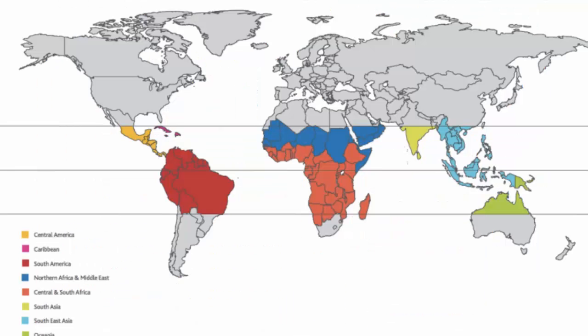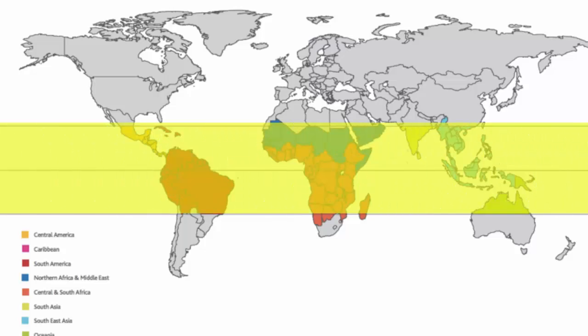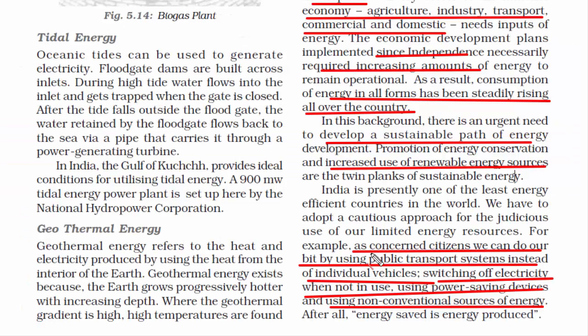These non-conventional sources are a bit costly, but if we can work on the cost, India can benefit hugely — since India is a tropical country and sunshine is in abundance. And with this, we have come to an end of this chapter.